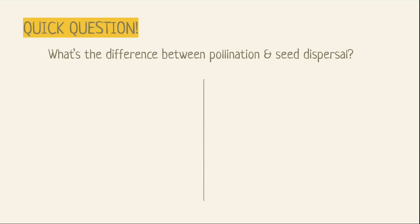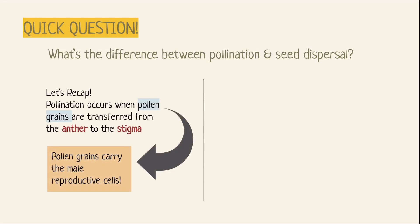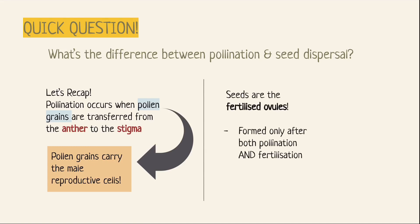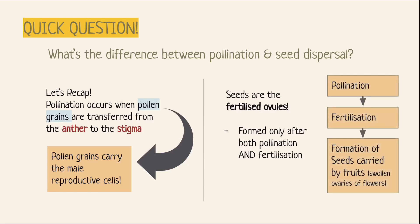Quick question: what's the difference between pollination and seed dispersal? Pollination occurs when pollen grains are transferred from the anther to the stigma — pollen grains carry the male reproductive cells from one flower to another flower of the same kind. Seeds, on the other hand, are fertilised ovules formed only after both pollination and fertilisation have occurred.